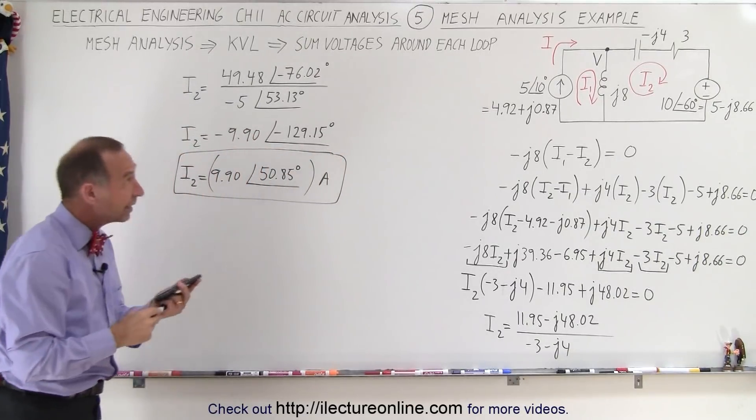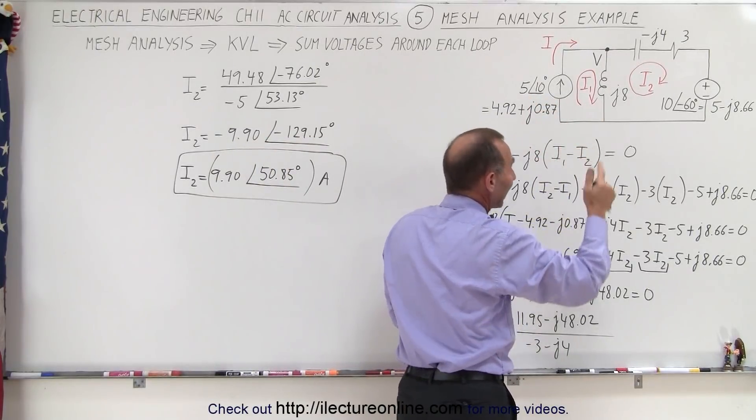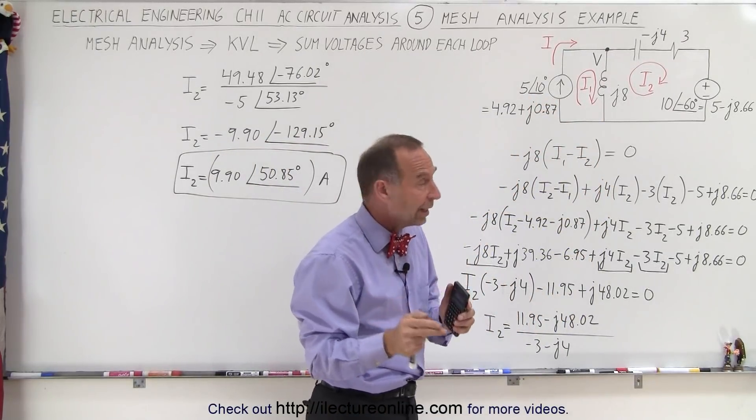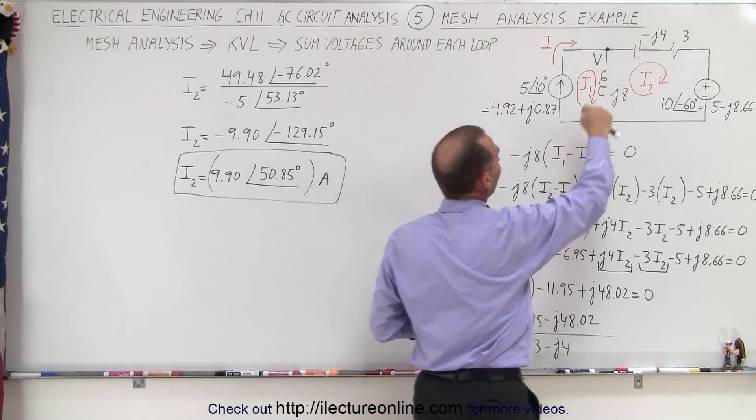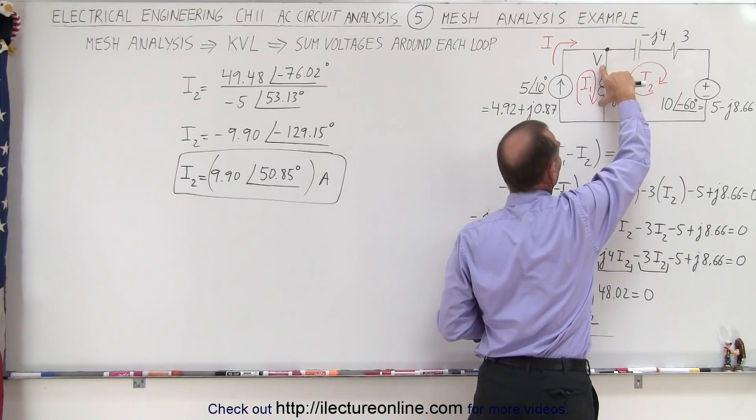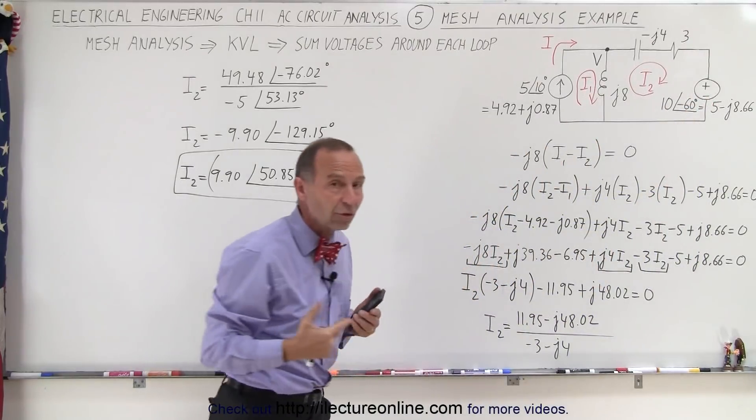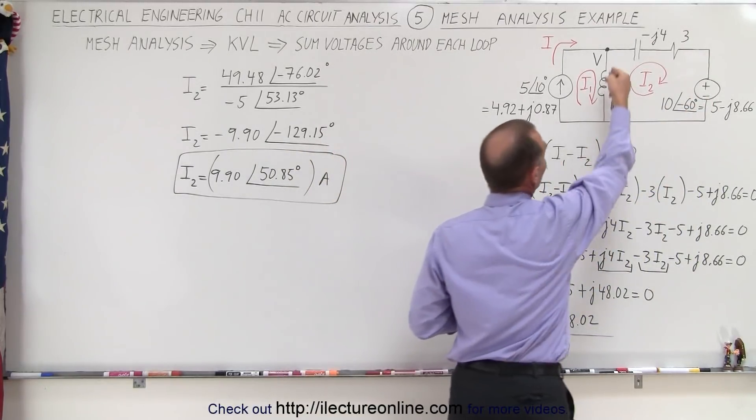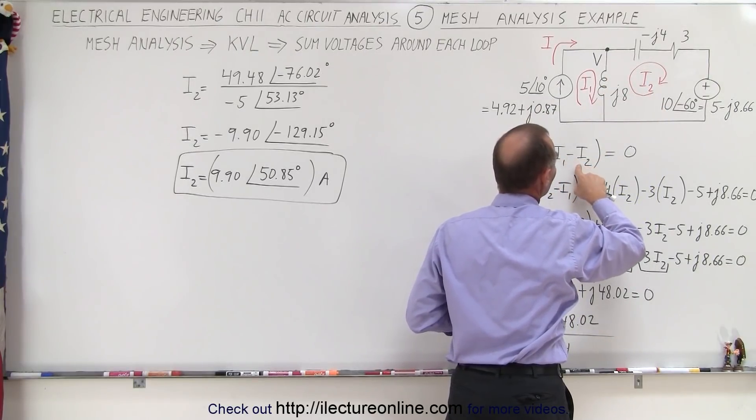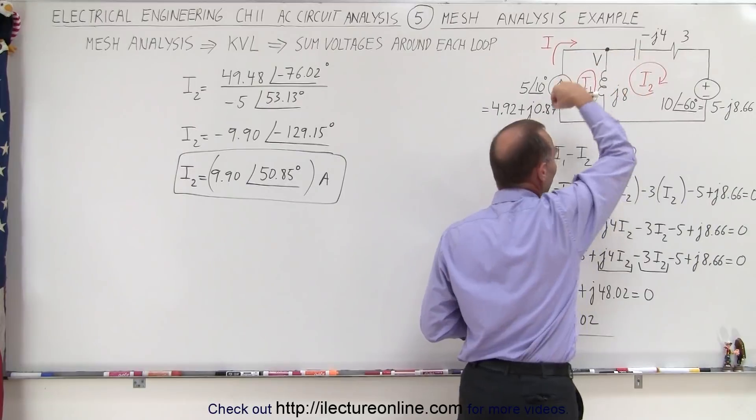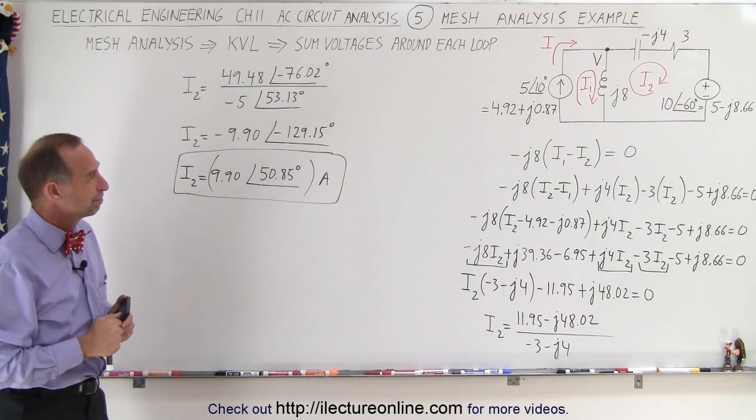So now we've calculated I2 and we know I1 to be equal to the source. Notice a slight difference between what we did here and what we did in the previous video when we used node analysis is that I1 was the current only going through the inductor here and I2 was the current going through this branch right here. But it should get you the same results if you want to find the current through the inductor we simply go ahead and use I1 minus I2 and we'll get the same values we had in the previous video as well. And that's how it's done. Thank you very much.